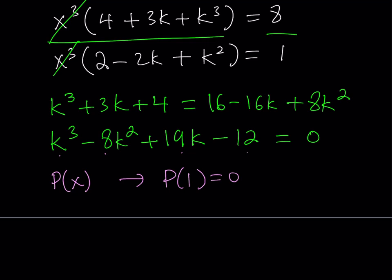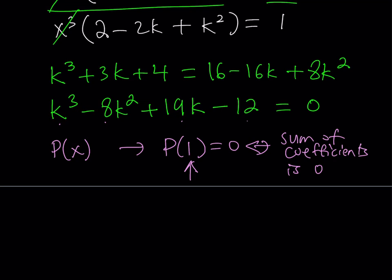It just means in a polynomial, if you have a polynomial P(x), and you have that P(1) is equal to 0, this just means that the sum of coefficients is 0. Because when you replace x with 1, you get P of 1. And if that's equal to 0, that means that's the sum of coefficients. So this tells us that k equals 1 is a solution.